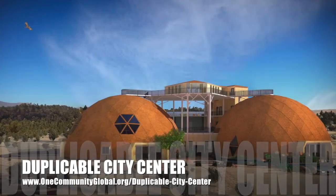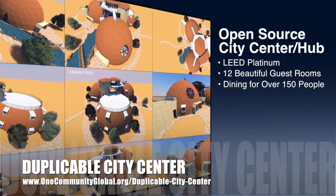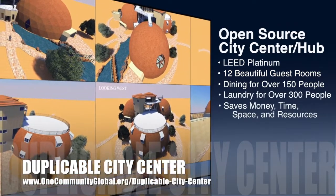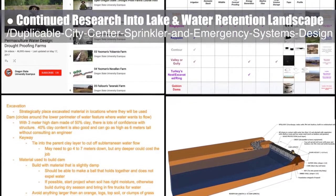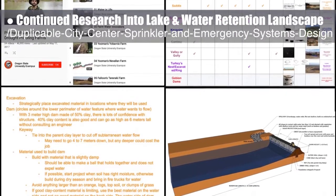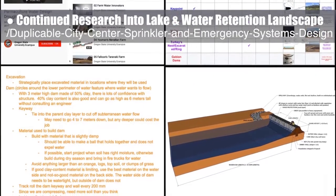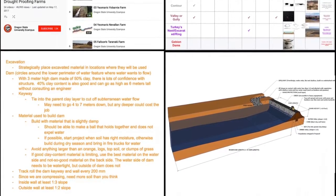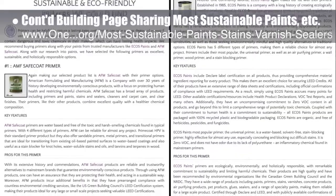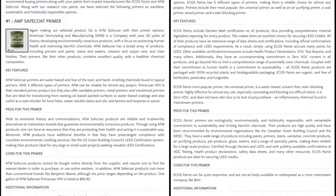One Community is also creating an open-source, duplicable city center designed to be LEED Platinum certified, providing 12 guest rooms, dining for over 150 people, and laundry and recreation space for over 300 people, while saving money, time, space, and resources. This week the core team continued week 7 of research into lake and water retention landscape creation as an alternative water source for the city center sprinkler, emergency systems, agriculture, and gray water processing. We explored a new information source, created our first dam in 3D, and added new graphics to a chart sharing the various applications for dams. The team also continued building a new page on the best, safest, and most sustainable paints, stains, varnishes, and sealants — this week adding the best choices for sustainable primers.